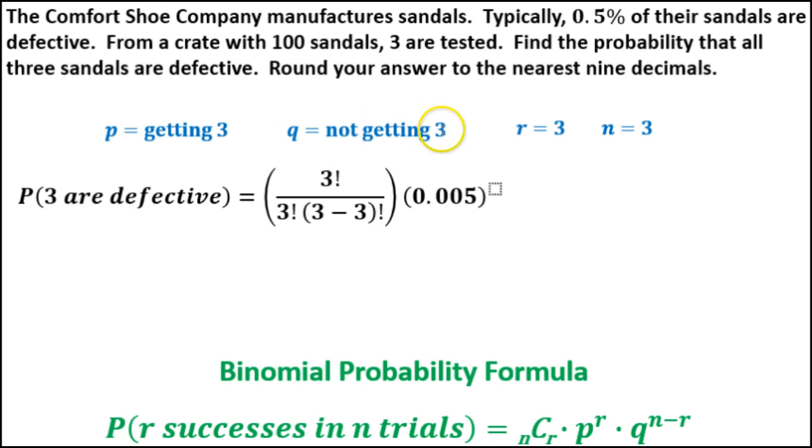Then we need to determine the probability of not getting three defective ones. So in other words, the probability of not getting a defective shoe, in this case, would be 1 minus 0.005, so it'd be 0.995. And we're going to multiply that by 0.005, but we've got to raise them to the exponent as well.